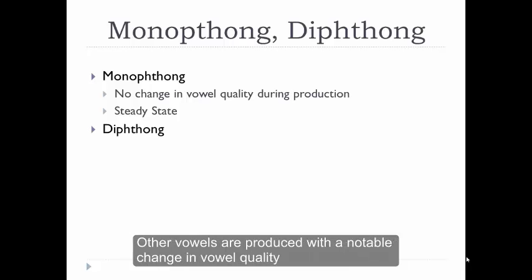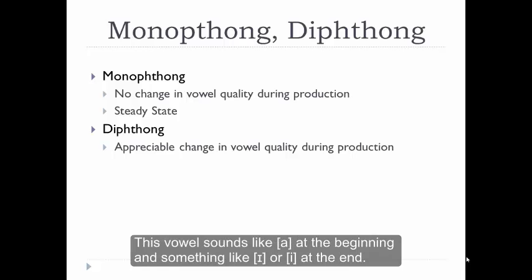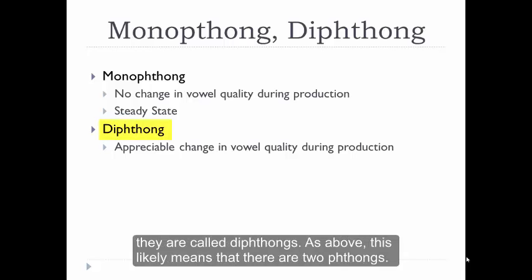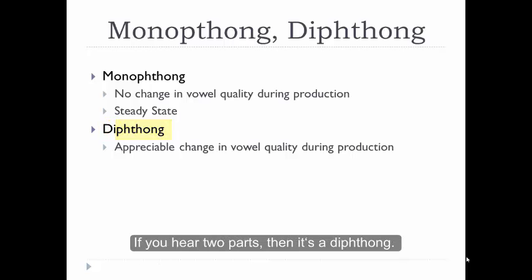Now, other vowels are produced with a notable change in vowel quality across the production of the vowel. An example of this kind of vowel is I. This vowel sounds like AH at the beginning and something like I or E at the end. Because there are two identifiable components of these vowels, they're called diphthongs. If you hear two parts, then it's a diphthong.